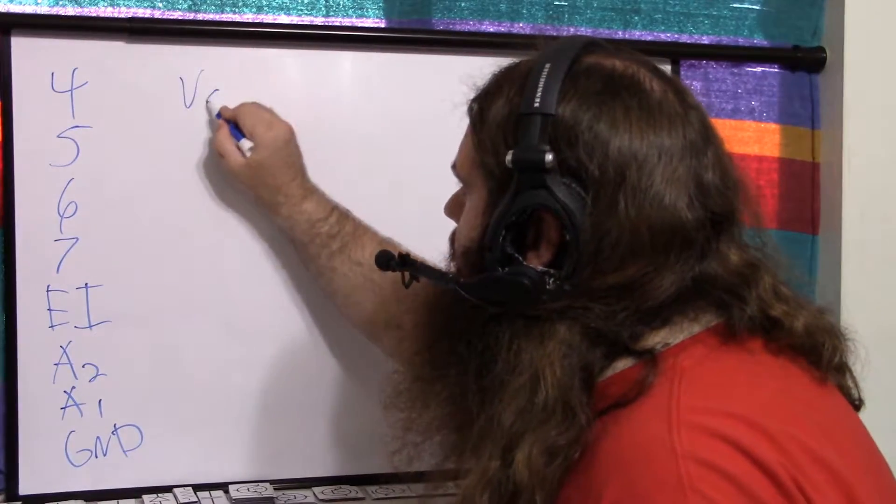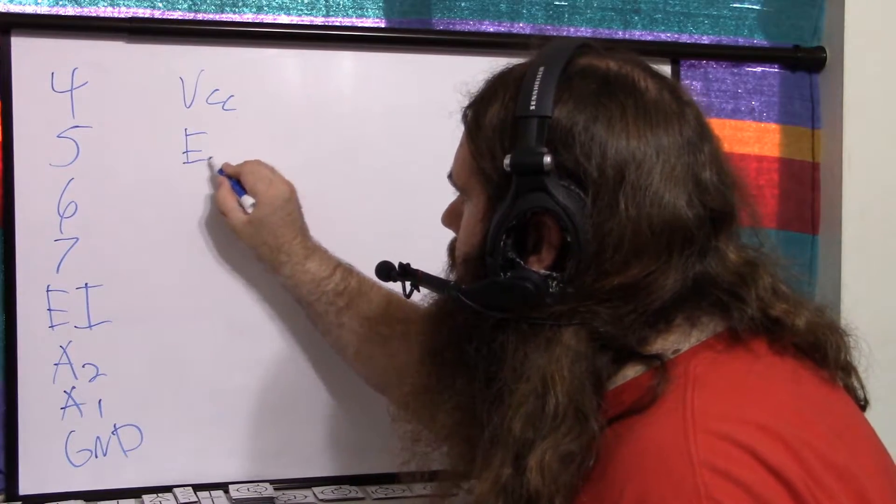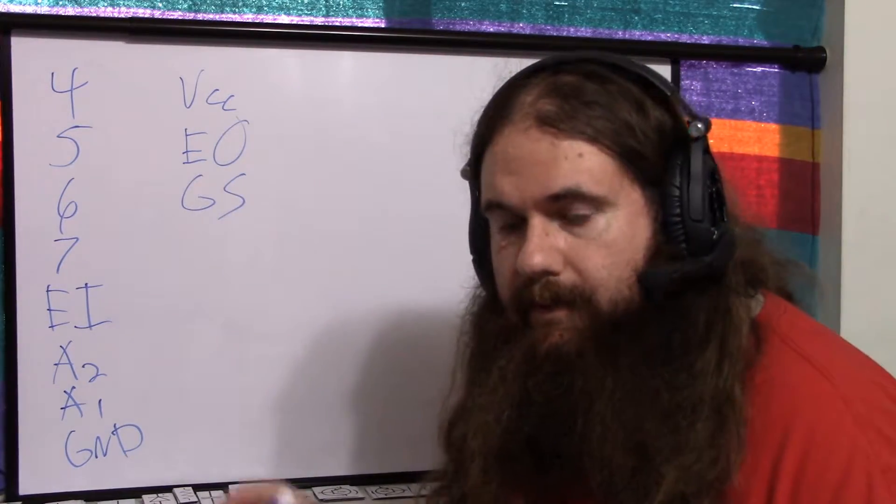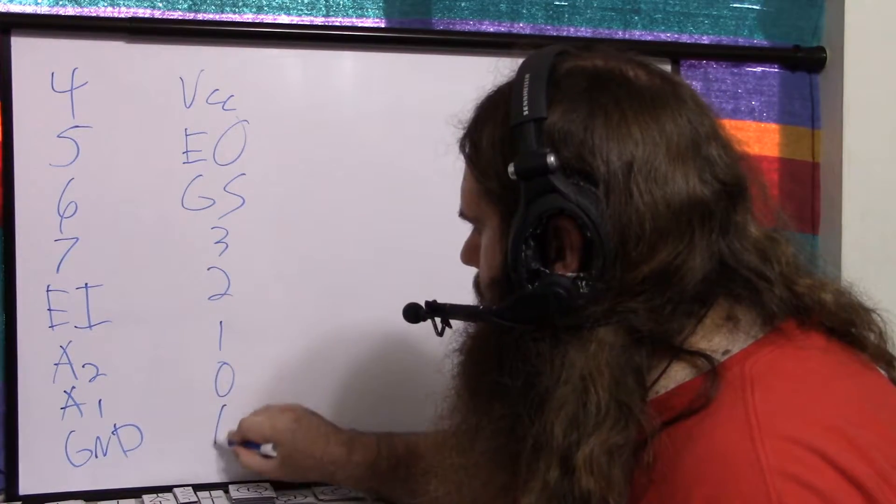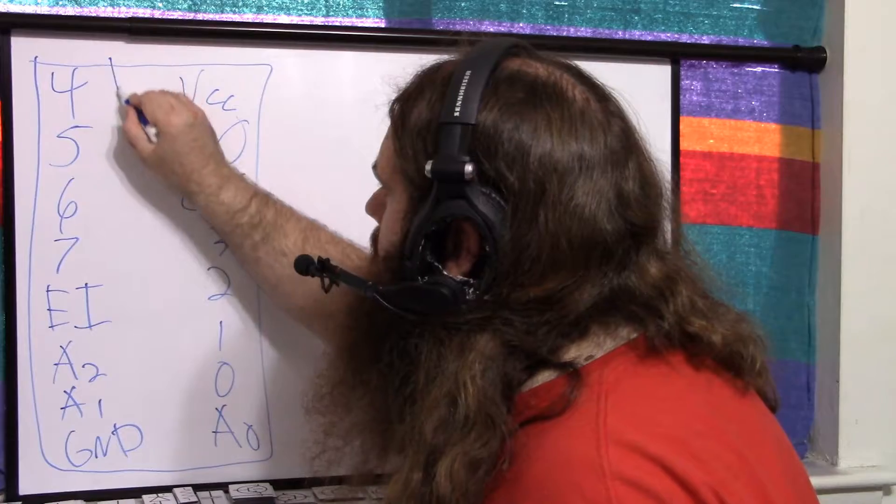And over here, VCC, Enable output. That's an O, not a 0. I don't know what GS stands for. It's a magic pin. And we've got 3, 2, 1, 0. And finally, the A0. And the little notch is there.